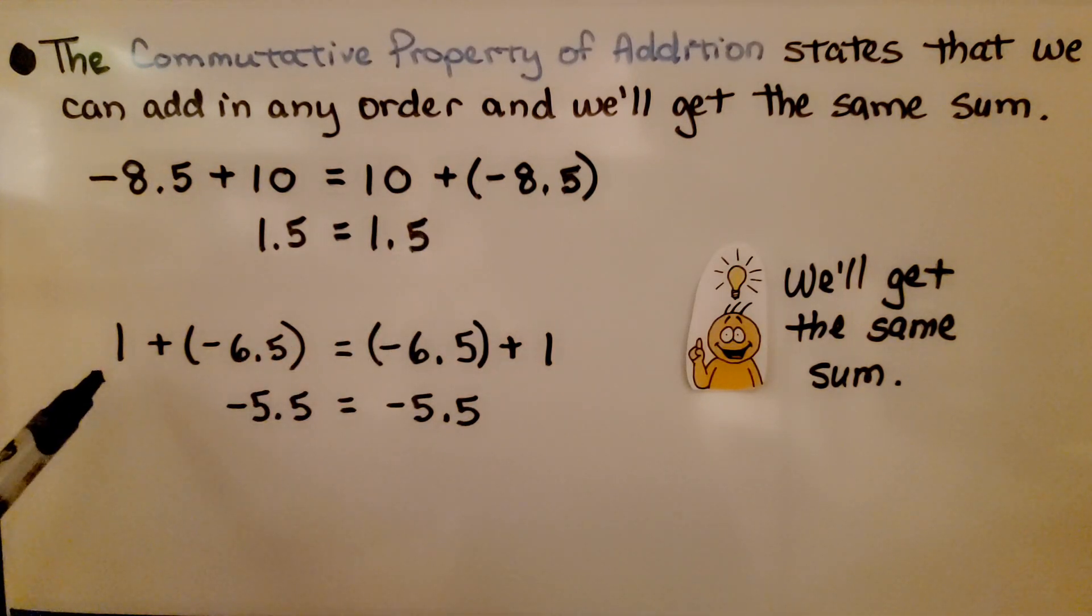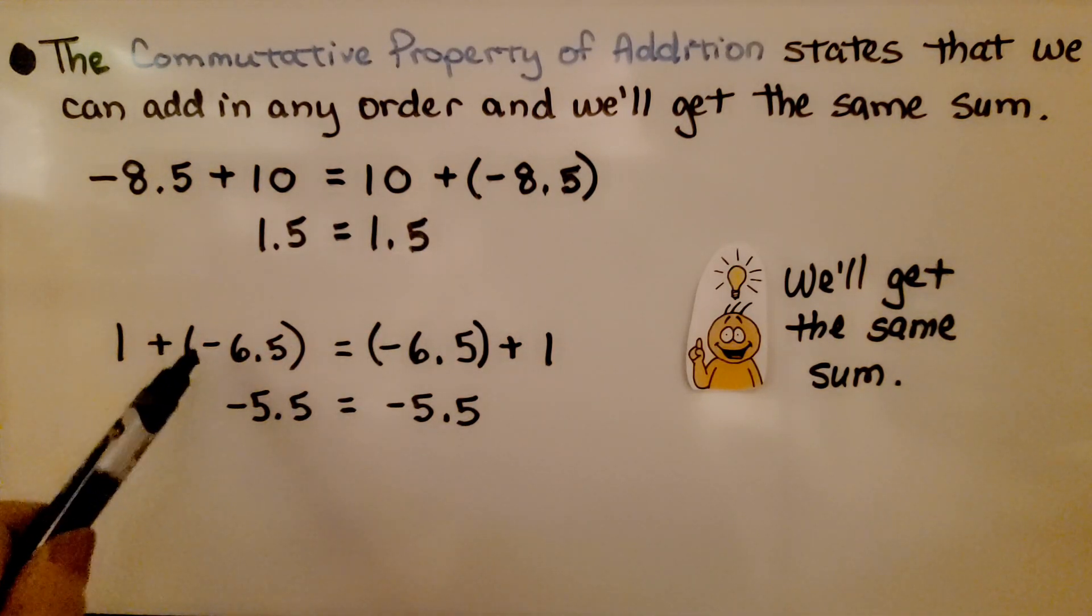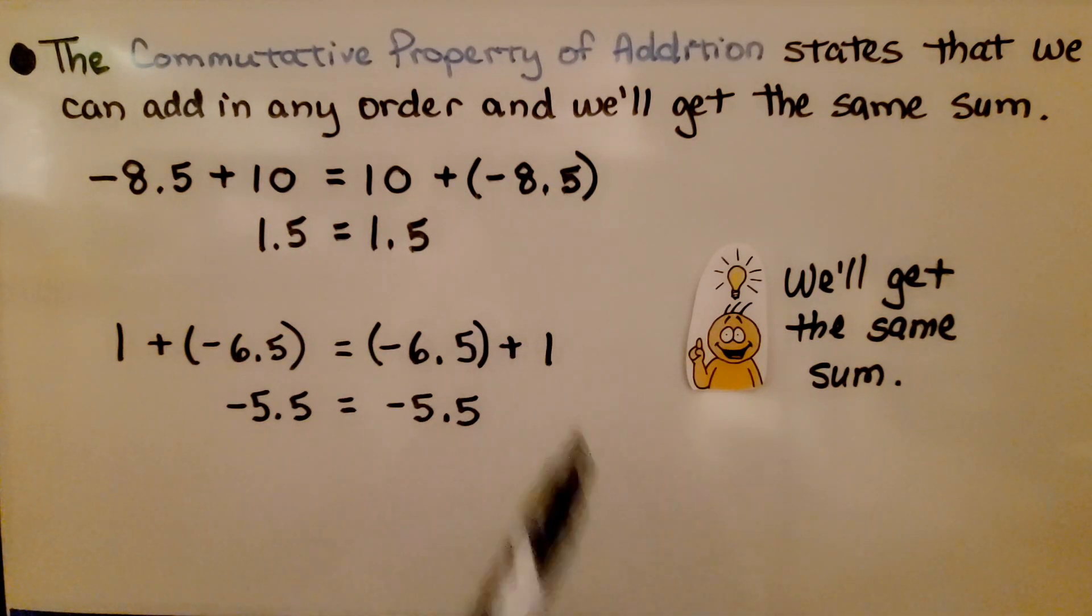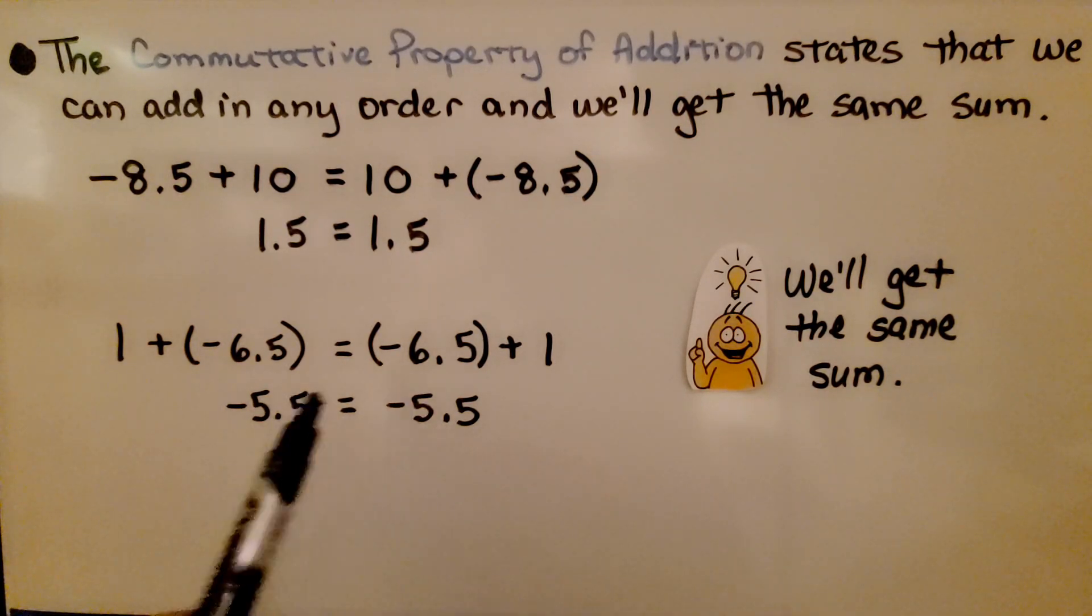If we have positive 1 plus negative 6.5, it's equal to adding negative 6.5 plus positive 1. They're both equal to negative 5.5. We'll get the same sum, doesn't matter the order of the addends.